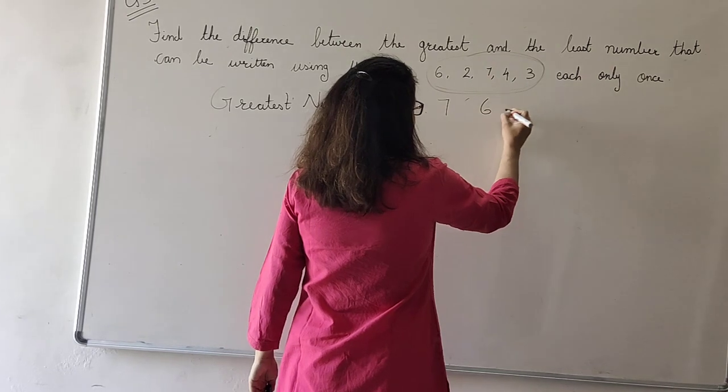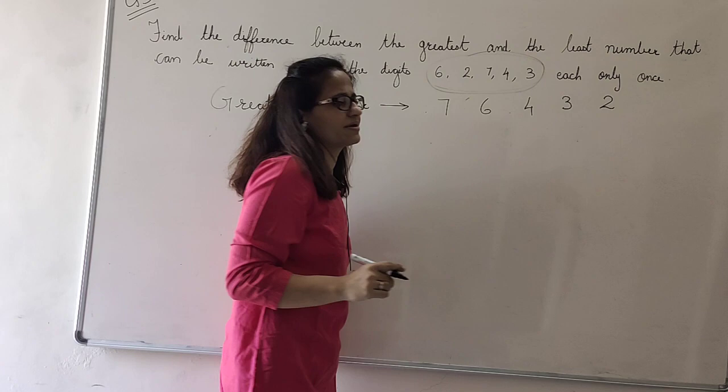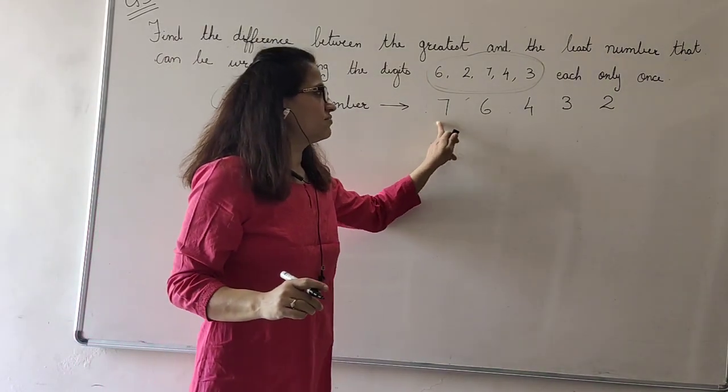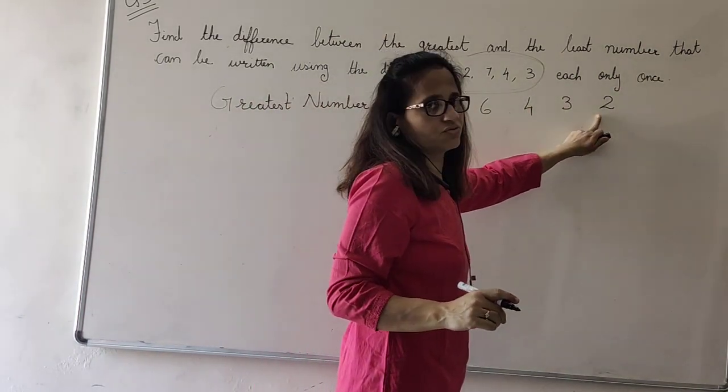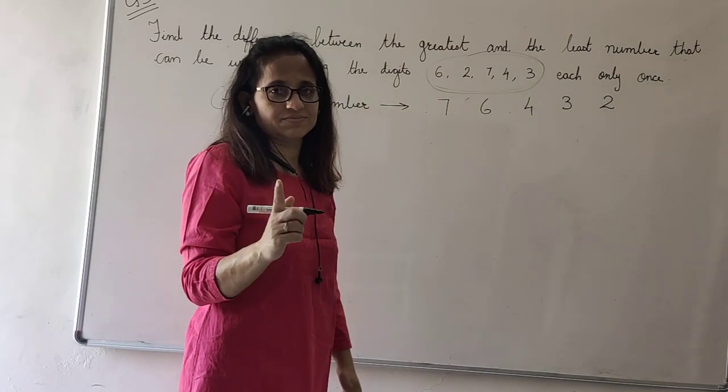6, 4, 3, and 2. Keep some gap between the digits. The number formed is 76,432. Now you could see that all the digits are only one time written.